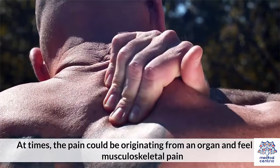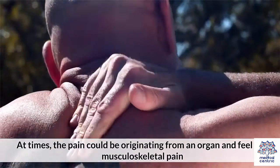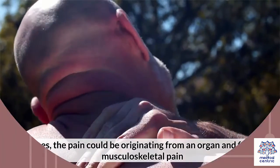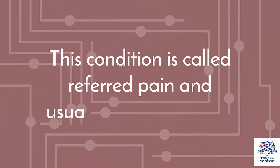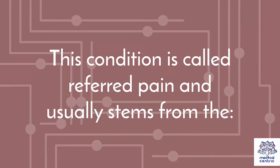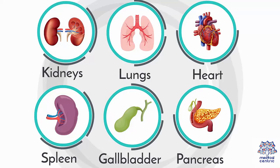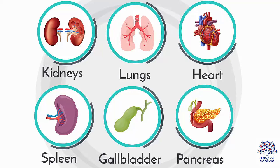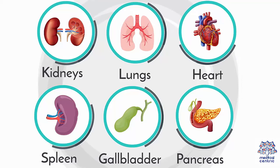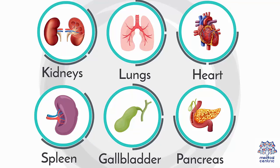At times, the pain could be originating from an organ and feel like musculoskeletal pain. This condition is called referred pain and usually stems from the kidneys, lungs, heart, spleen, gallbladder, or pancreas.